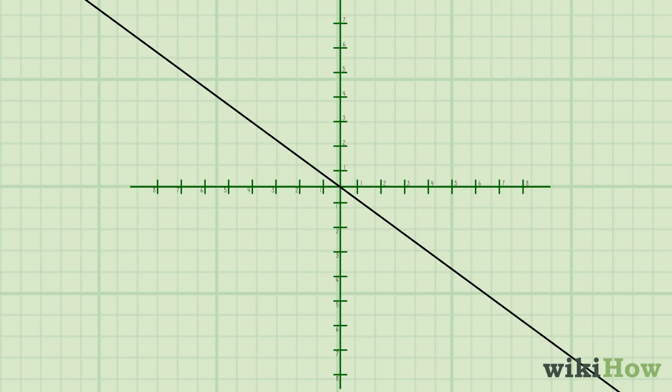To figure out how steep the line is, look at the magnitude of the number. Whether it's positive or negative, the greater the magnitude, the steeper the slope.